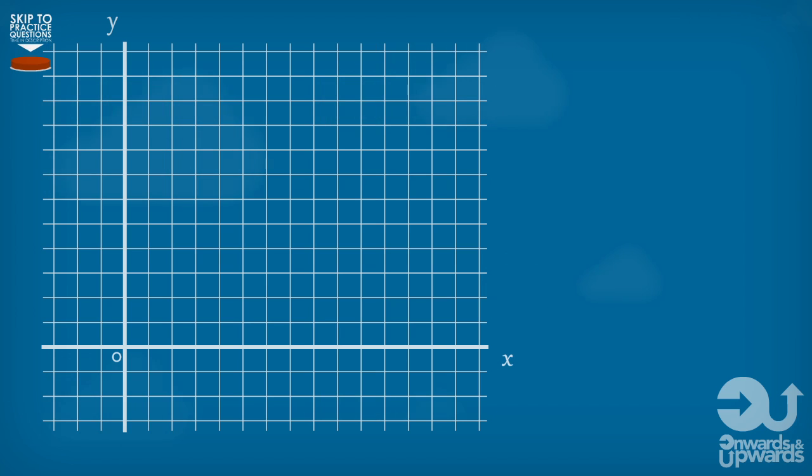This is usually done on a grid that looks something like this, using something known as column vectors.